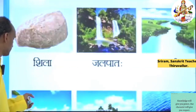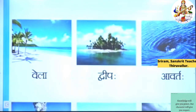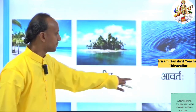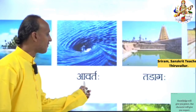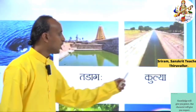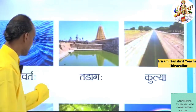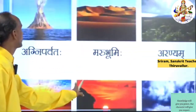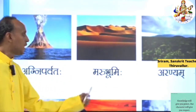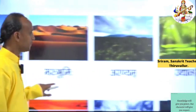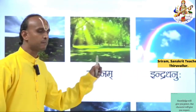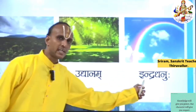Now I will teach you the third line. Listen carefully children. Vela, Dvipaha, Avartaha, Tadagaha, Kulya. Then the fourth line: Agni Parvataha, Marubhoomihi, Aranyam, Uddhyanam, Indradhanuhu.